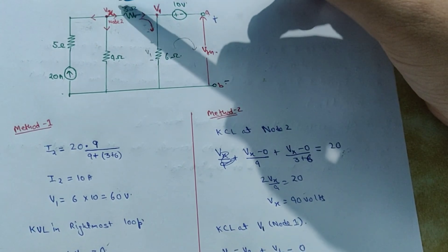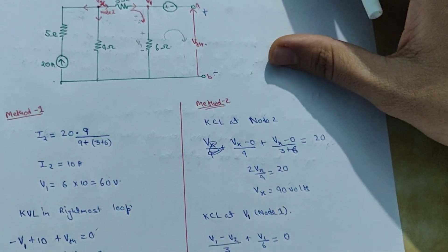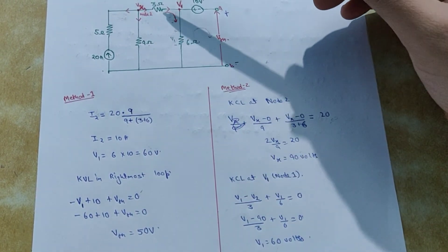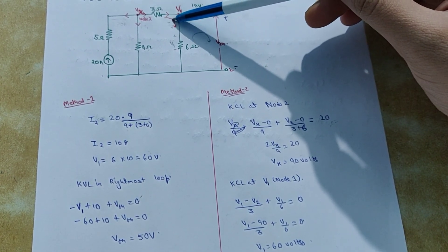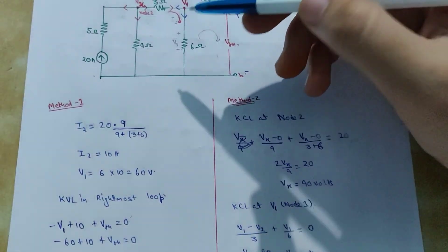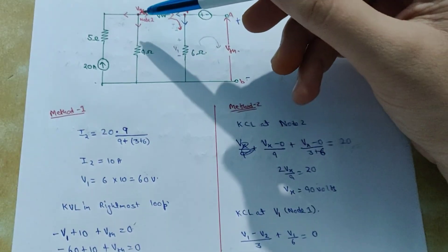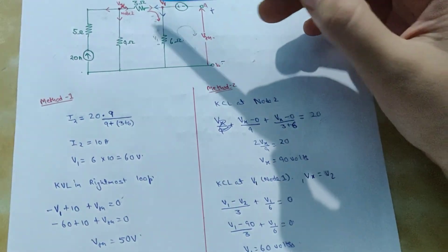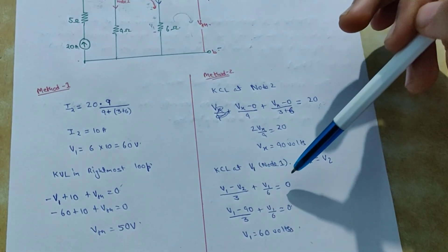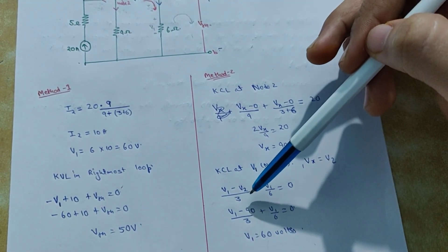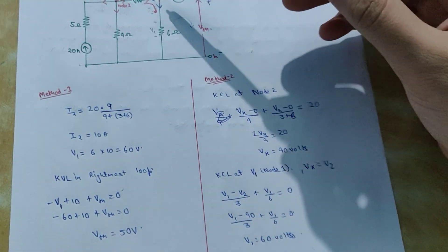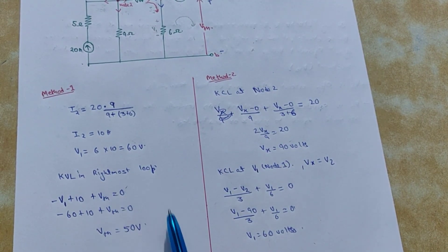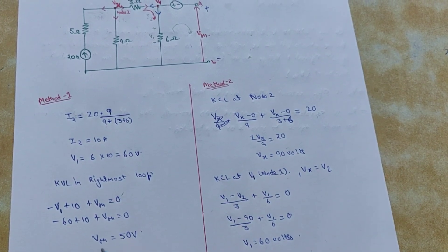Now applying KCL at node 1: V1 minus V2 over 3 plus V1 minus 0 over 6 equals zero. Substituting V2 equals VX equals 90 volts and solving, V1 comes out to be 60 volts again. Then applying KVL in the rightmost loop again, VTH again comes out to be 50 volts.